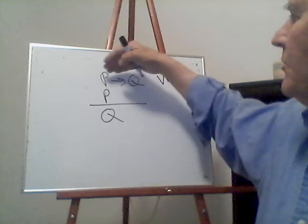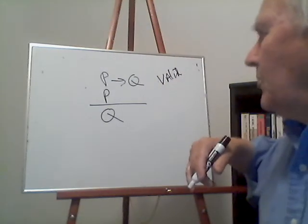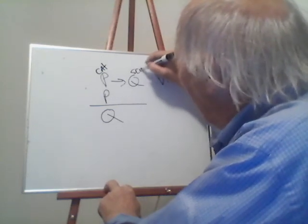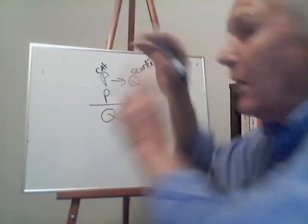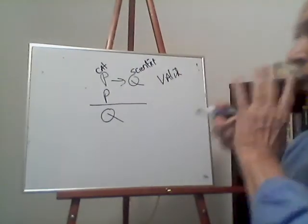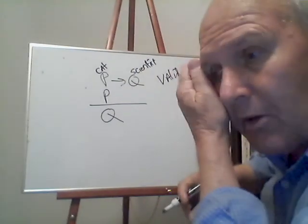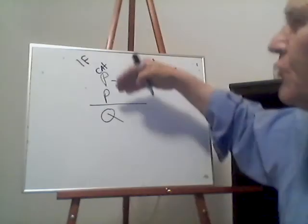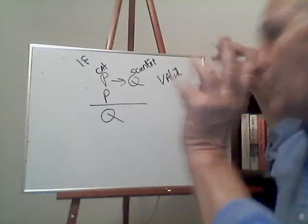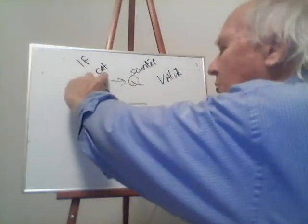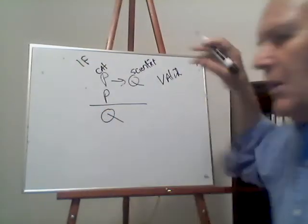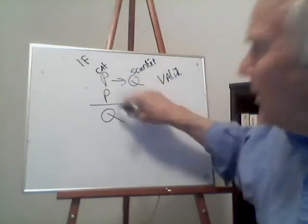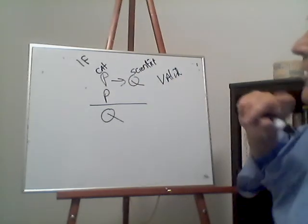It doesn't matter what P and Q stand for. I could say if it's a cat, then it's a scientist — that's crazy, but we don't care. A valid argument is one where if the premises are true, the conclusion has to be true. Another way to put it: assuming the premises to be true, the conclusion is true. In a valid argument, the conclusion follows logically from the premises.